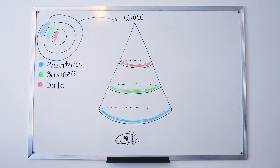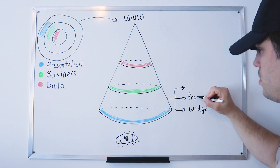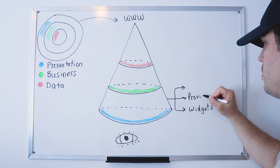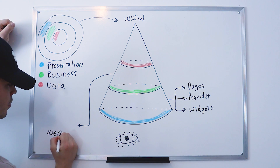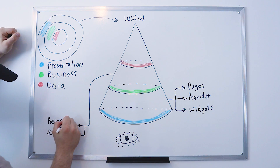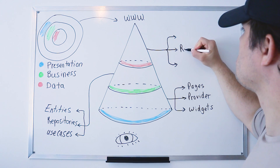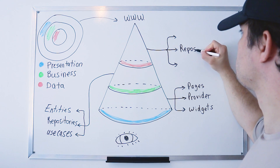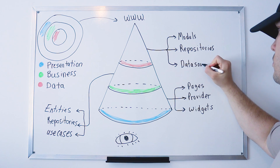When coding with clean architecture, we separate every layer into three different folders. For the presentation layer: widgets, provider, and pages. For the business layer: use cases, repositories, and entities. And for the data layer: repository, models, and data source.